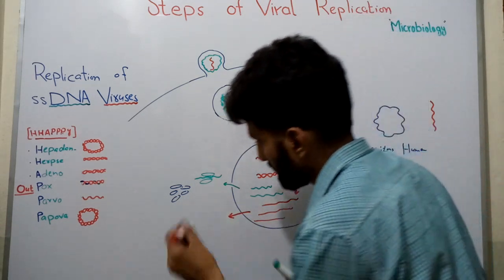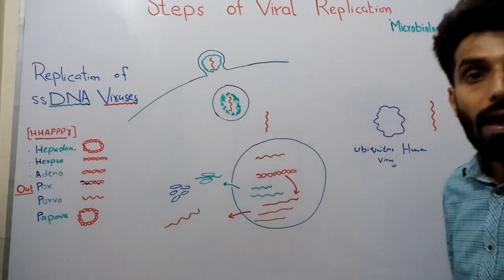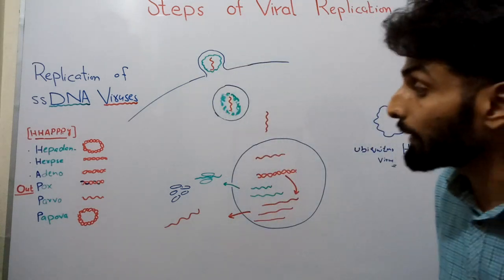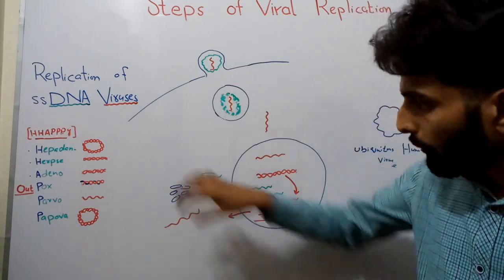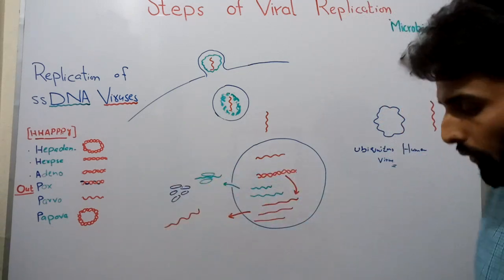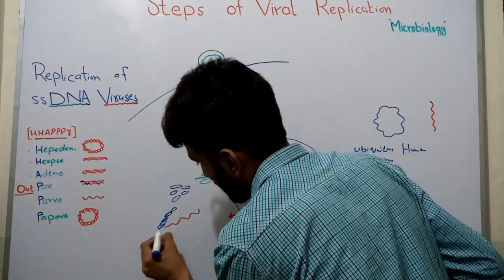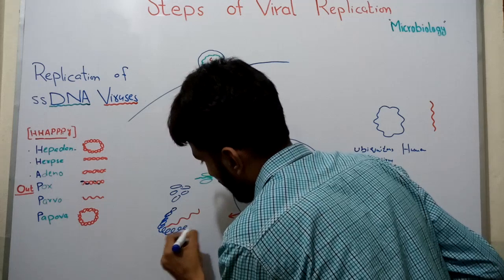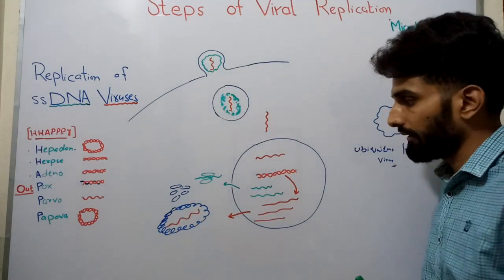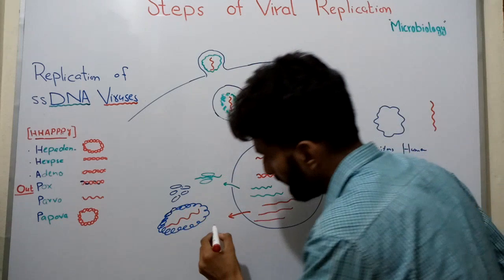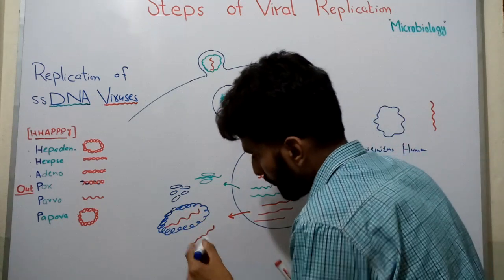These DNA copies come out of the nucleus into the cytoplasm. In the cytoplasm, assembly of the virus takes place — proteins and genome are both present — and an exact copy of the single-stranded DNA virus is formed.